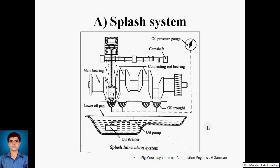A splasher or dipper is provided under each connecting rod — it is provided at the big end of the connecting rod and dips inside the splash troughs. At every revolution of the crankshaft, the dipper dips into the oil trough and oil is splashed over the interior of the crankcase, onto the pistons, and on the exposed portion of the cylinder walls. A hole is drilled through the connecting rod cap through which oil passes to the bearing surfaces. Oil pockets are also provided to catch the splashed oil over all main bearings and camshaft bearings. The oil dripping from the cylinders is collected in the sump, cooled, and recirculated.